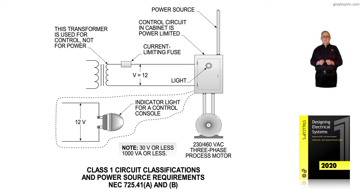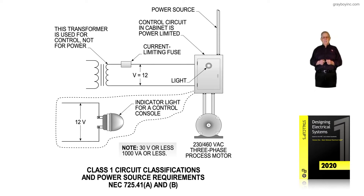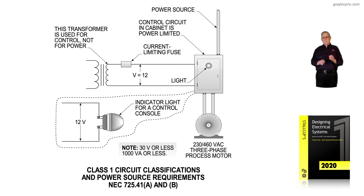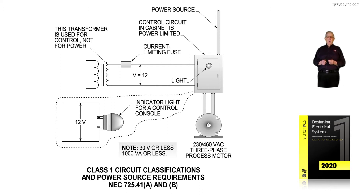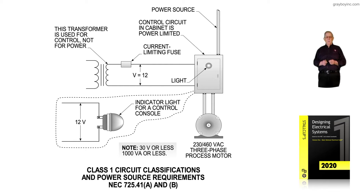This illustration deals with class 1 circuit classifications and power source requirements in accordance with NEC 725.41A and B. NEC 725.41A deals with unlimited power sources — voltages such as 120 volts, 208 volts, 240 volts, 480 volts, all the way up to 600 volts, which is how it was classified and used.